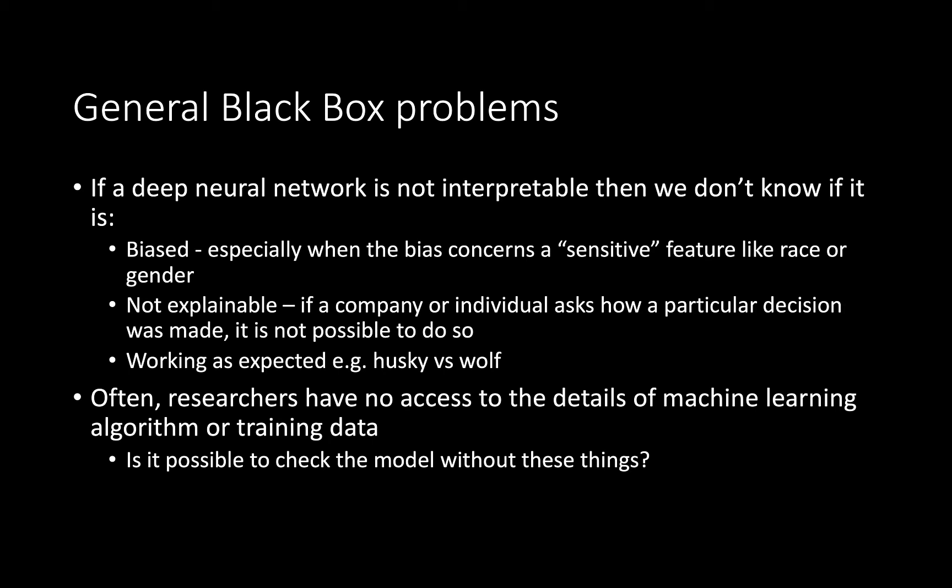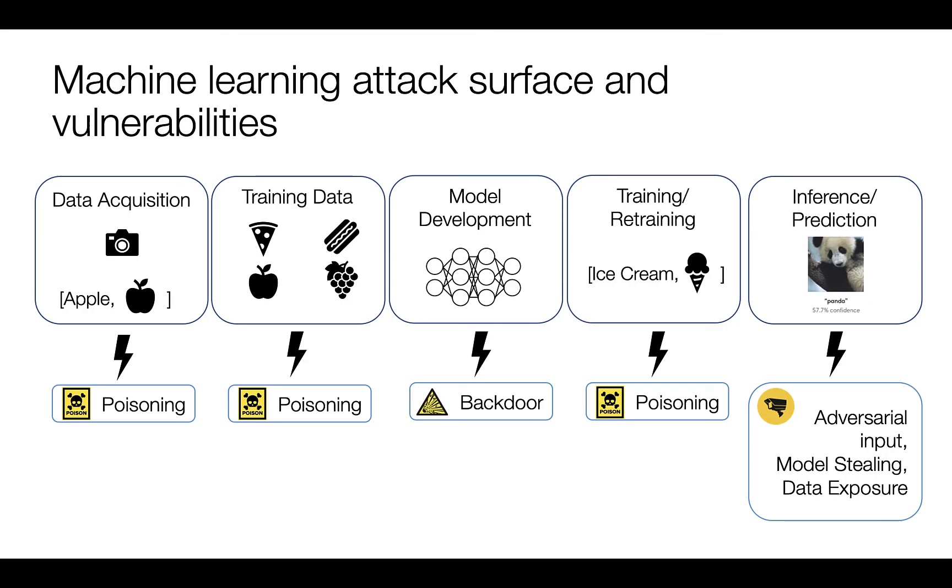Potentially biased algorithms are an important consideration in artificial intelligence generally, and also in cybersecurity. Often researchers have no access to the details of the algorithm or training data. You can check the model without these things through reverse engineering, but this is a significant problem with black box models.